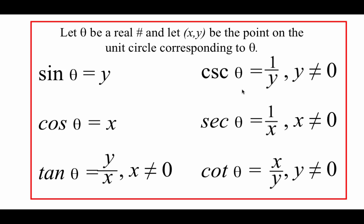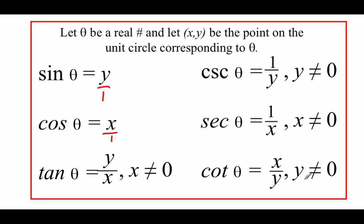The other functions are called reciprocal functions — we take the fraction and flip it over. Cosecant is related to sine: sine gives us Y, so cosecant is 1 over Y, where Y can't be zero. Secant is related to cosine: cosine gives us X over 1, so secant is 1 over X, where X can't be zero. Cotangent is related to tangent — flipping the fraction puts X on top and Y on the bottom, so Y can't be zero.